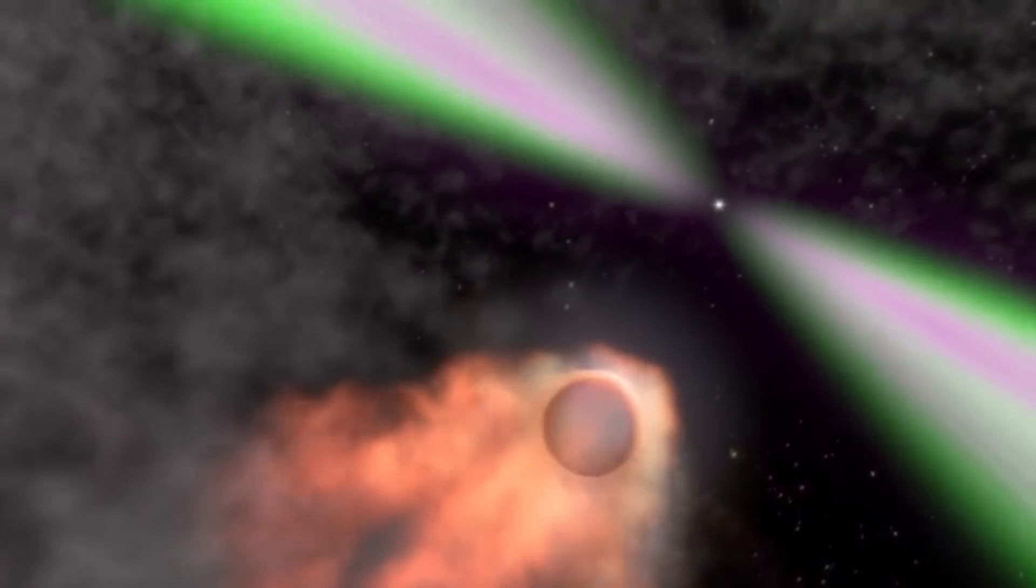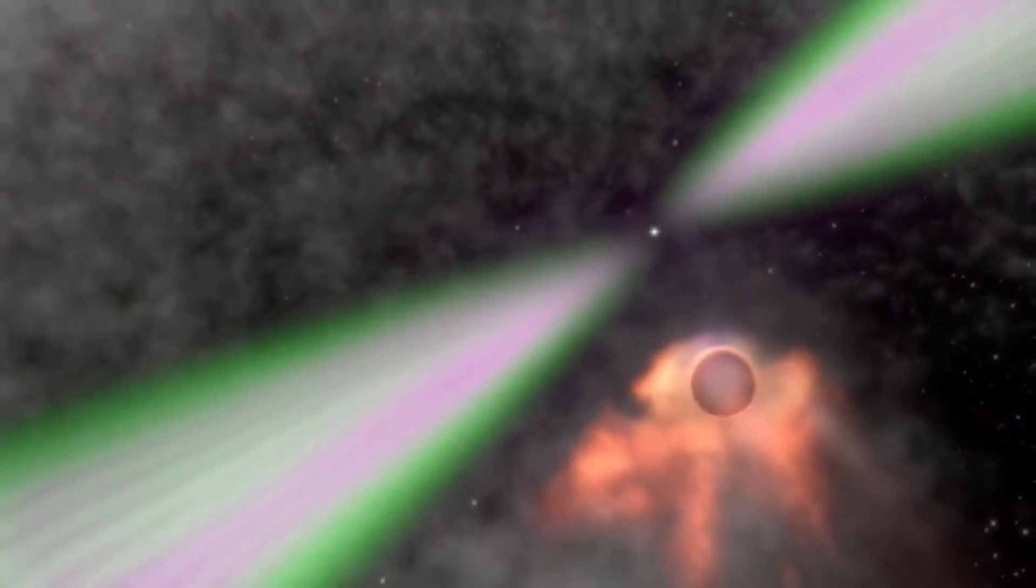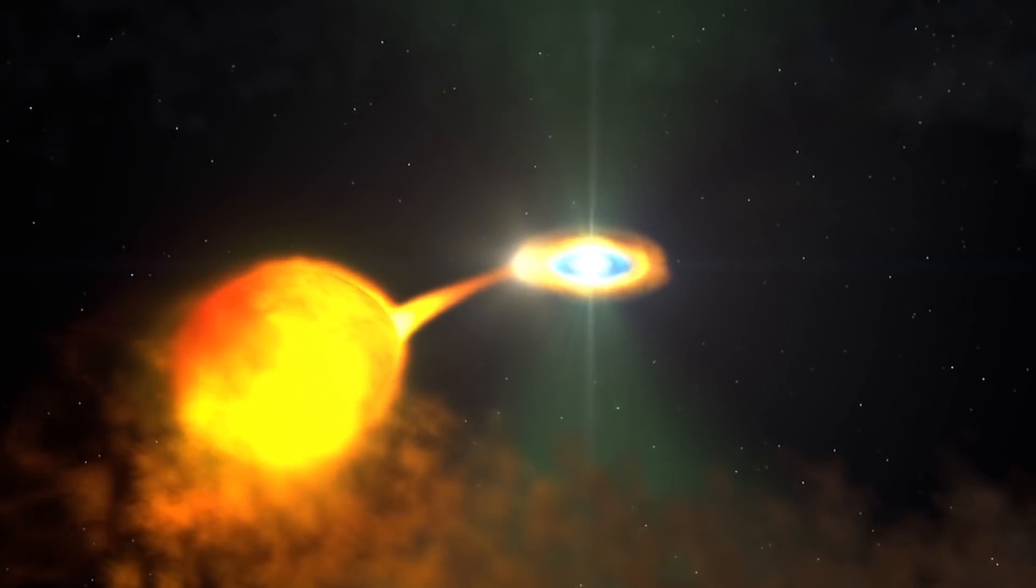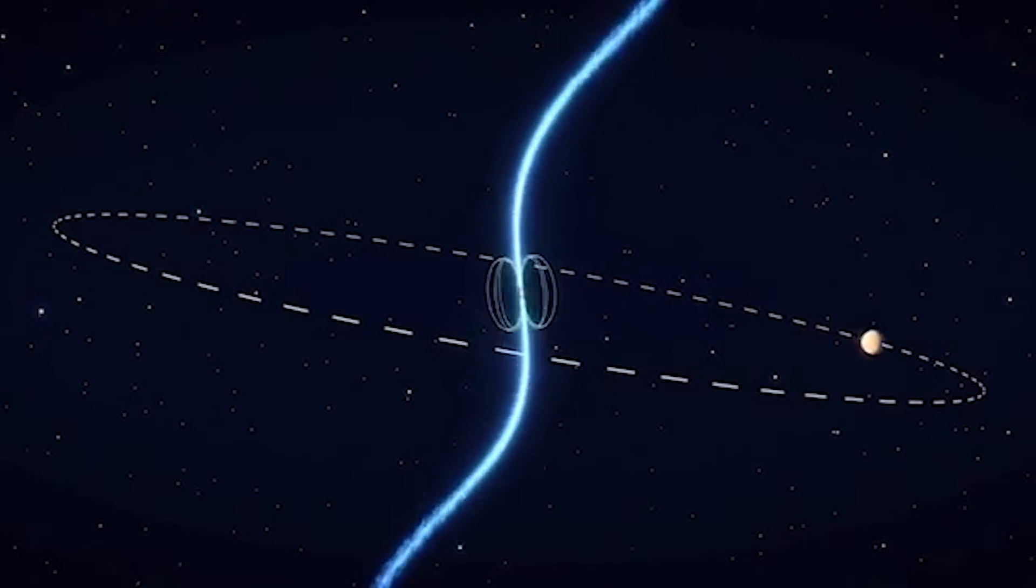Since neutron stars are so dense, on Earth, one teaspoon of this stellar material would weigh about a billion tons. The planet's parent star is a special kind of flashing star known as a millisecond pulsar, a rapidly rotating neutron star formed from a supernova.